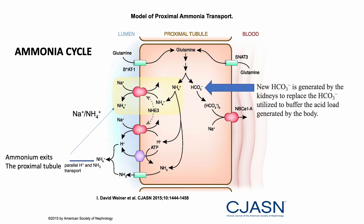Now, the main points of the ammonia cycle: glutamine, an amino acid in the proximal tubule, gives us two bicarbonate and two NH4. The kidneys generate new bicarbonate to replace the bicarbonate utilized to buffer the acid load generated by the body. When you eat protein, you generate acid, and bicarbonate neutralizes it — the new bicarbonate comes from glutamine in the kidney.